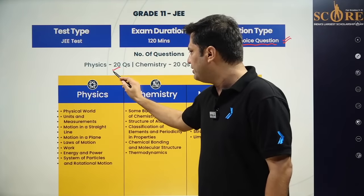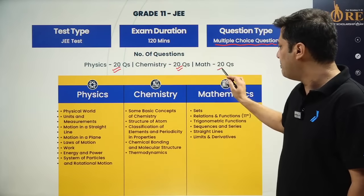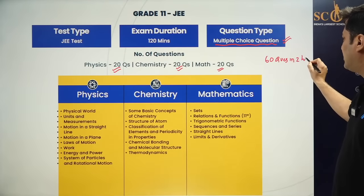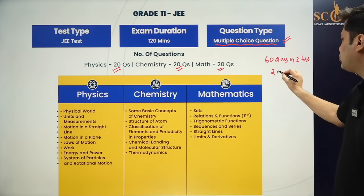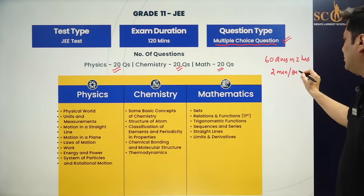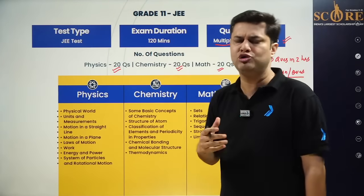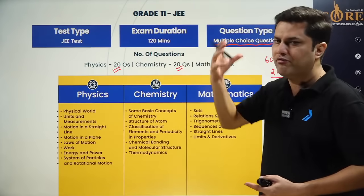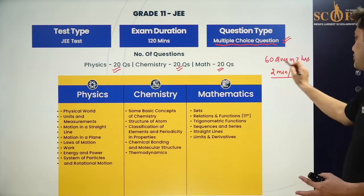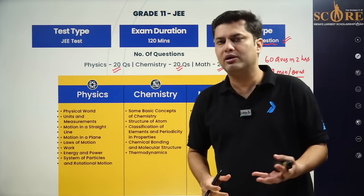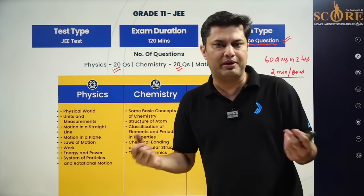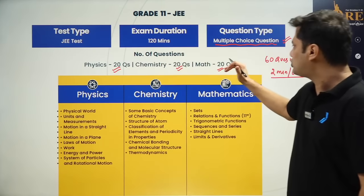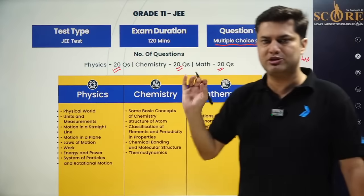Physics has 20 questions, chemistry has 20 questions, and maths has 20 questions — basically 60 questions in two hours, which means two minutes per question. The question level will not be very high; it will be around JEE Main level, not JEE Advanced. Since it's 60 questions in two hours, the paper will not be very lengthy. The format is objective: four options with only one correct answer.